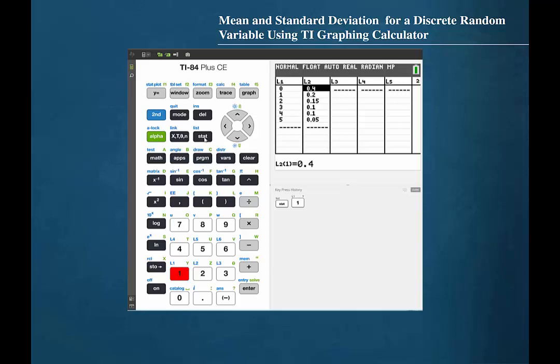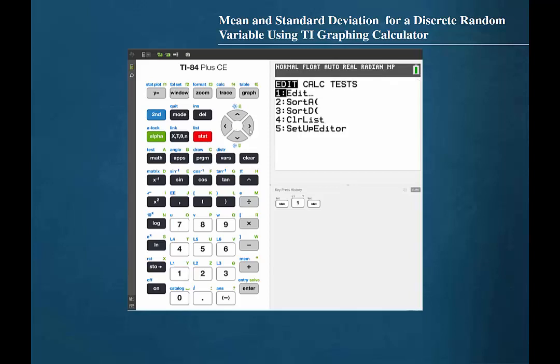Now press STAT and cursor over to CALC. Then press 1 for 1 variable statistics. We entered the values of the random variable into list 1, so we should press 2nd 1 to specify this list. Then cursor down. The frequency list is the list that contains the corresponding probabilities. We entered those probabilities into list 2, so press 2nd 2.